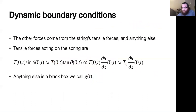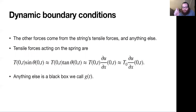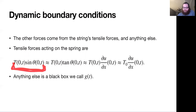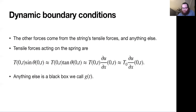The tensile or tension forces — the magnitude of that tension vector acting on that mass — we're calling T of zero comma t. We want the y component, the vertical component, of that force, which is this magnitude times sine of the angle that the force is making.